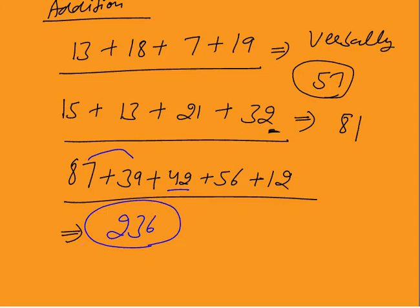You must be able to add two-digit plus two-digit numbers — any number of them, say 4, 5, or 6 numbers. Two-digit addition you should be able to do verbally. You can practice at any time, anywhere, whenever you are free. Take any 4 or 5 numbers and start adding them.